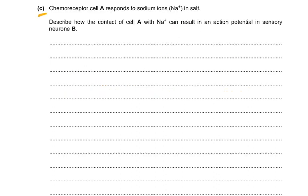Part C is a very direct question. Chemoreceptor cells A respond to sodium ions in salt. To describe how contact of cell A with sodium ions results in an action potential in sensory neuron B: sodium ions enter the chemoreceptor cell A through microvilli channel proteins, the cell surface membrane is depolarized — this is the receptor potential — and the threshold must be crossed. Calcium channels open and calcium ions enter the cytoplasm. Vesicles move and fuse with the cell membrane, and exocytosis of the neurotransmitter occurs. The neurotransmitter binds to the receptor on neuron B's membrane, sodium channels open, sodium enters sensory neuron B, the post-synaptic membrane is depolarized, and the threshold is crossed.